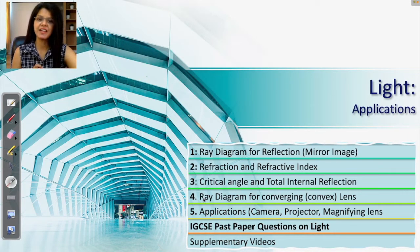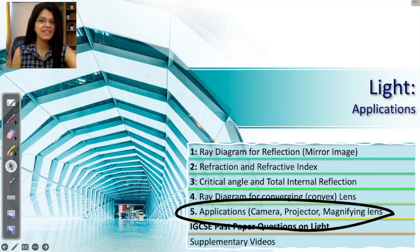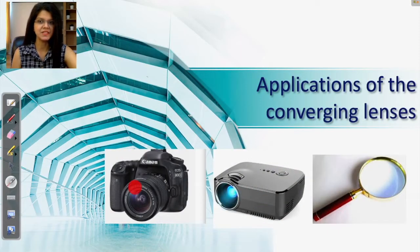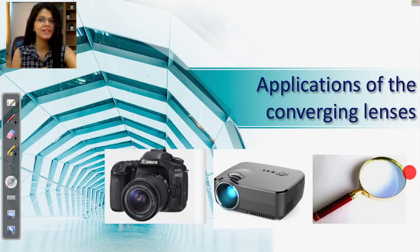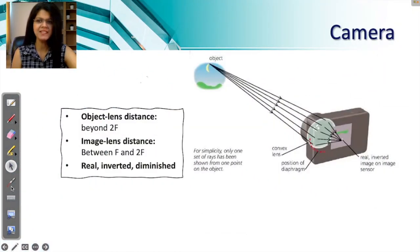Now that we have learned the ray diagram for converging lenses, let us understand some of its applications. Converging lenses, or convex lenses, are used in cameras, projectors, and magnifying lenses. This is our camera — this is the focus of our video, where we are going to understand how the convex lens creates the image in a camera. The next video will be on projectors, and the one after that on magnifying lenses.